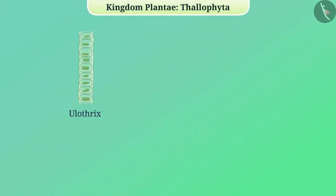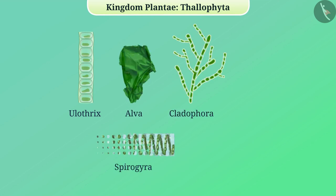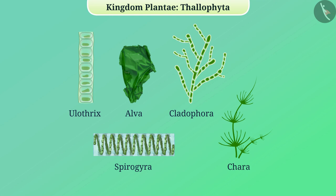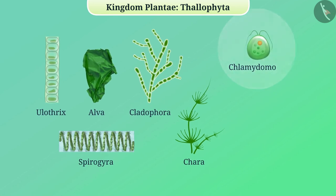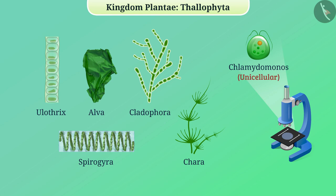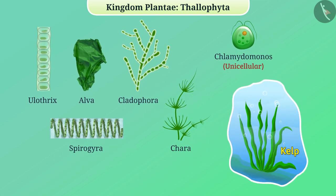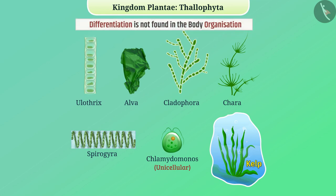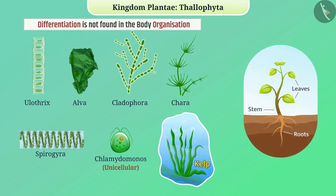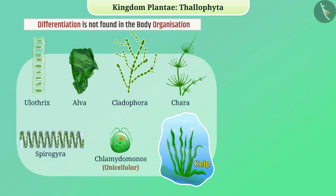Let's talk about Thalophyta in detail. Plants like Ulothrix, Ulva, Cladophora, Spirogyra, and Chara are included in this class. Their size varies — some organisms such as Chlamydomonas are unicellular, requiring a microscope to view, whereas some organisms such as kelp are very large. Differentiation is not found in the body organization of these plants; parts like roots, stem, and leaf are not developed in them. All plants in this group are commonly called algae.